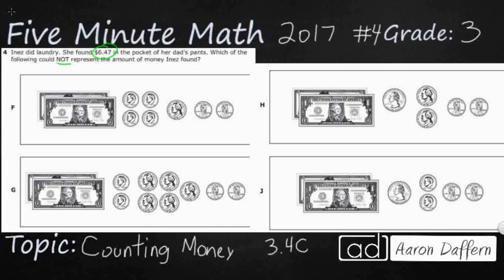And they do have a 5 and a 1, but just to go ahead and knock all of these out, all of these, F, G, H, and J, they all have $6 in bills, a 5 and a 1.